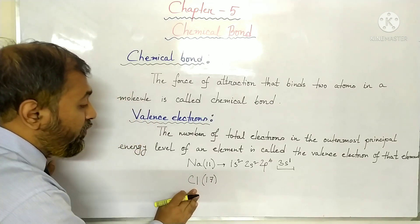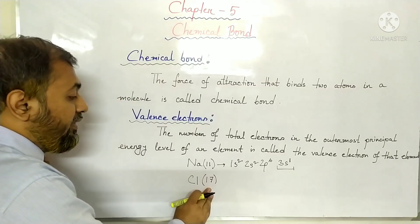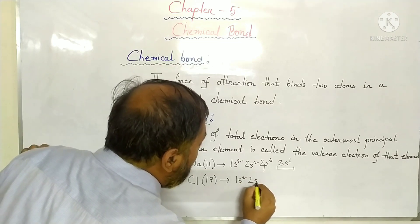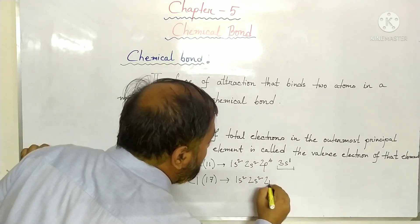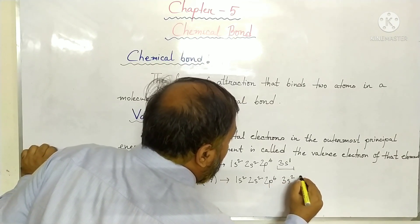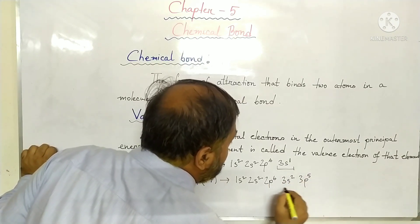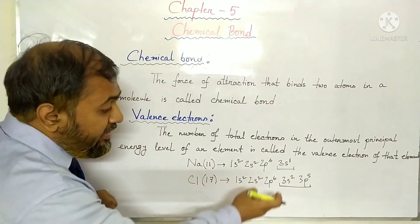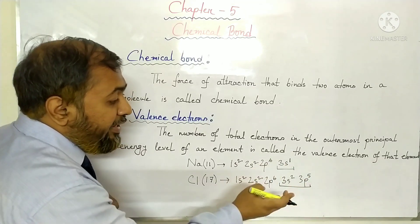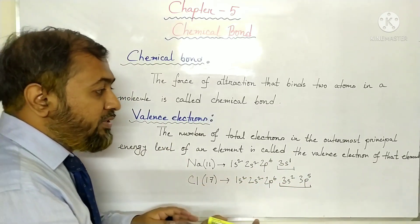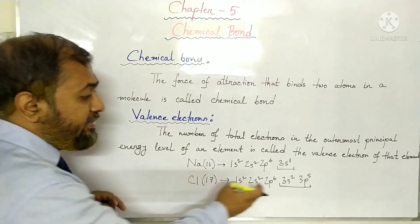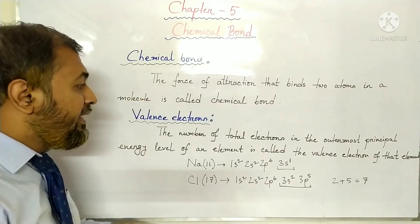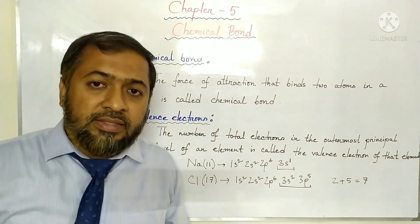You can see this is chlorine. Chlorine contains 17 electrons in its shell, and the electronic configuration of chlorine is 1s², 2s², 2p⁶, 3s², and 3p⁵. Now, the outermost principal energy level of chlorine is 3, and the total number of electrons present in the outermost principal energy level of chlorine is 2 plus 5, that means 7. So the valence electron of chlorine is 7.